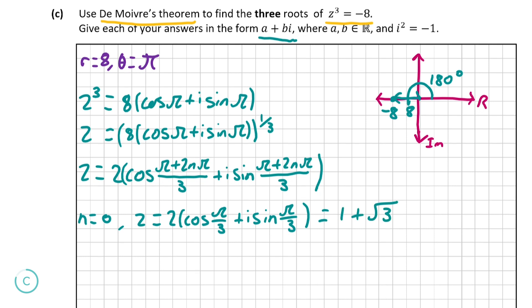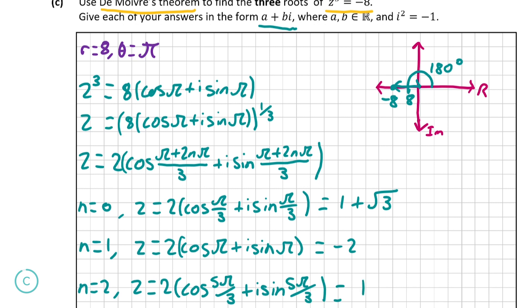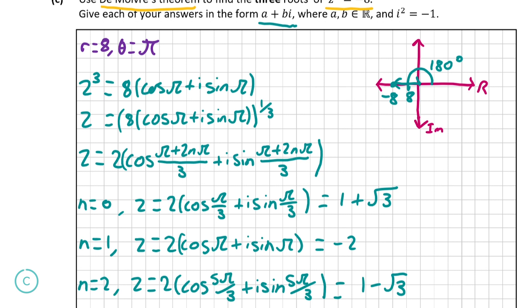We repeat this process for n = 1: z = 2(cos π + i·sin π), which in rectangular form is simply -2. For n = 2: z = 2(cos(5π/3) + i·sin(5π/3)), which in rectangular form is 1 - √3·i. So we've found our three answers. I always recommend making it clear to the examiner what your three answers are, so let's underline all three, and doing this will give you the full 10 marks for this question.